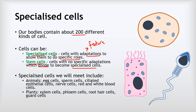We're going to meet quite a few specialised cells. In terms of animals, we're going to be looking at egg cells, sperm cells and ciliated epithelial cells in this presentation, and in later videos we'll look at nerve cells and red and white blood cells. For plants, we'll meet their specialised cells later in the programme — including xylem cells, phloem cells, root hair cells and guard cells.